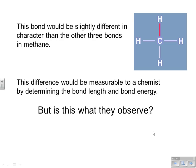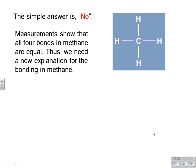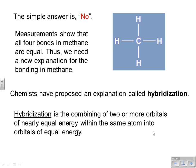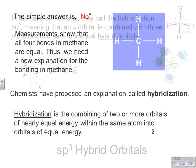But is that what we actually observe in a methane molecule? Simple answer: no. Measurements show that all four bonds in methane are equal in both distance and energy. So that particular model failed to adequately explain methane. What chemists then proposed is hybridization — combining two or more orbitals of nearly equal energy, like the 2s and 2p within the same atom, to form new orbitals of equal energy.